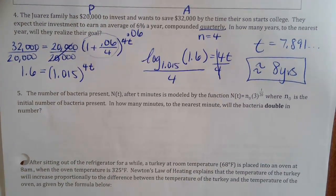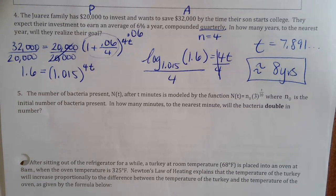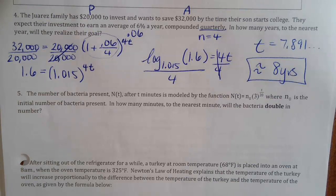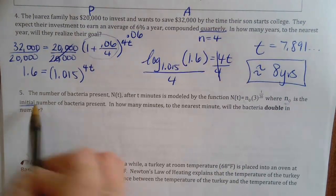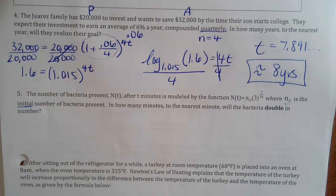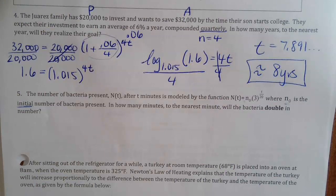Number five is an interesting take because they don't give you a starting amount — just a relationship. The number of bacteria present after T minutes is modeled by the following function. The N-sub-zero represents the initial number of bacteria, but no tangible number is given. The question asks how many minutes until the bacteria double in number. You could pick any amount — say if you start with 10, you'd want to know when it reaches 20.